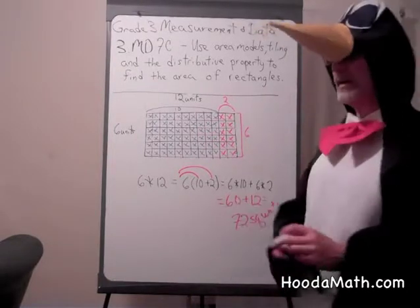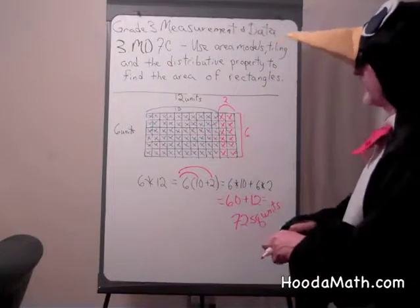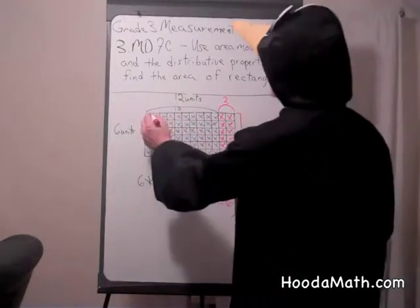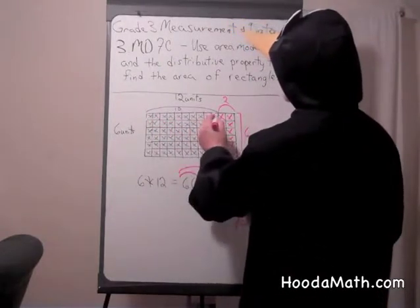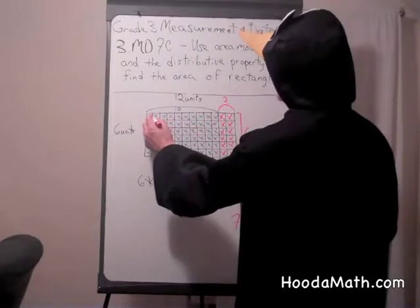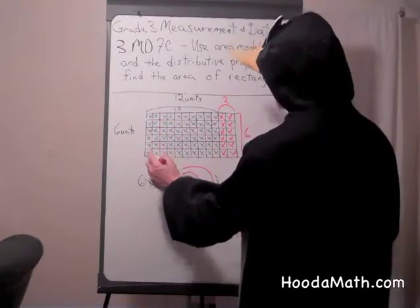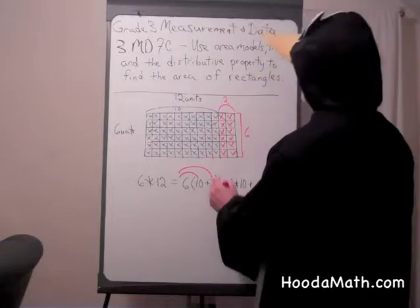Now let's look at it on the rectangle. If this row is 10 and we could just count 10, 20, 30, 40, 50, 60. That's our 60 here.